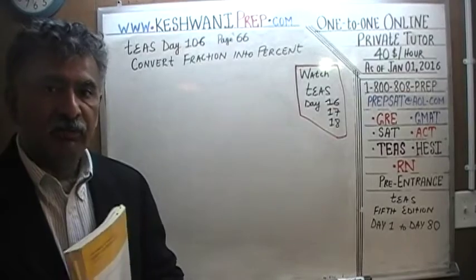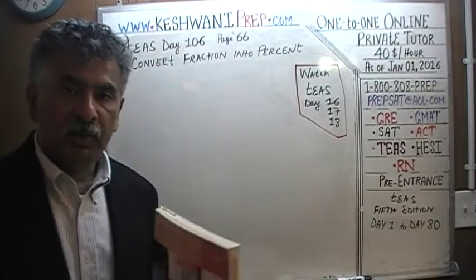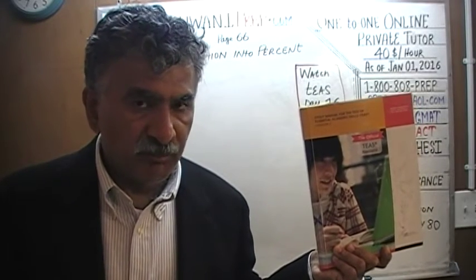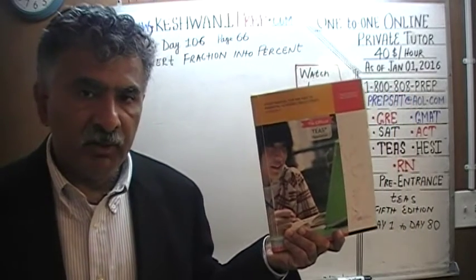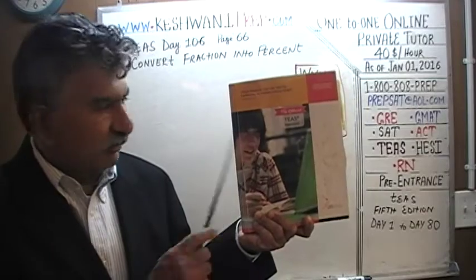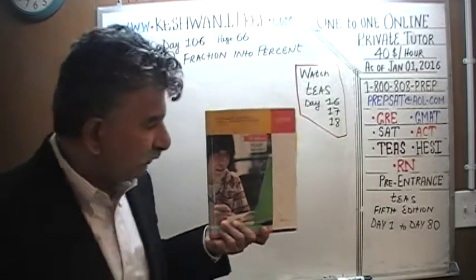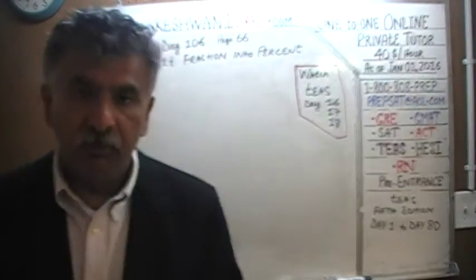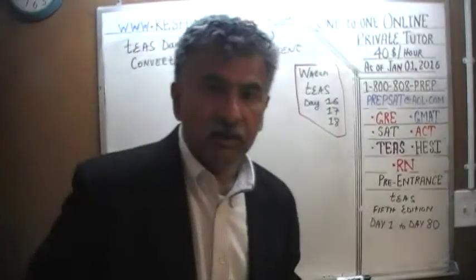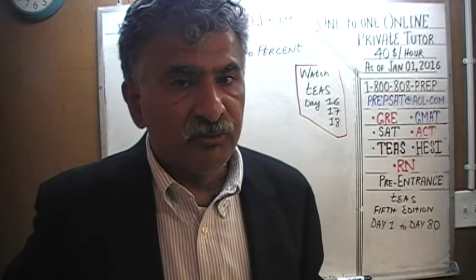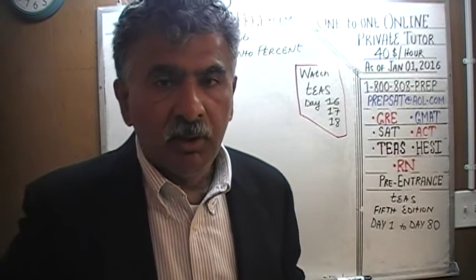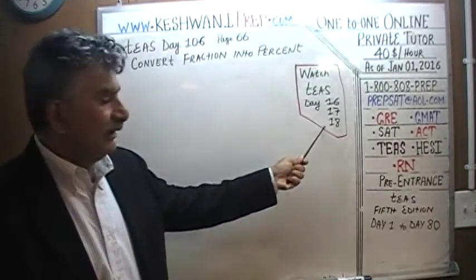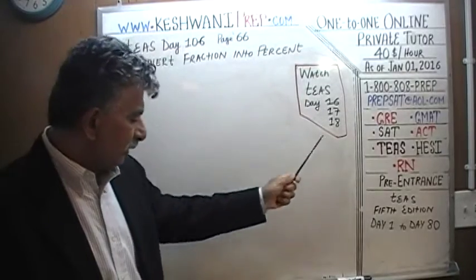We began the series six days ago on day 101 where we started solving problems from the sixth edition. If you want to get some extra practice, you will find that we have done all the problems from the previous fifth edition, and you'll find those solutions from day 1 through 18. The concepts we're dealing with now — conversion from percentage to decimals to fractions and back — you'll find on day number 16, 17, and 18. Just type in TEAS day 16 or 17 or 18 and it will pop right up.